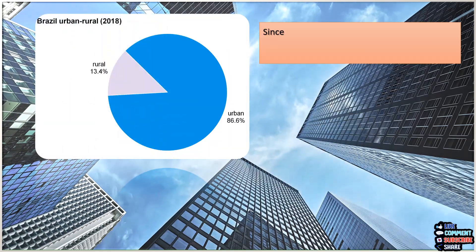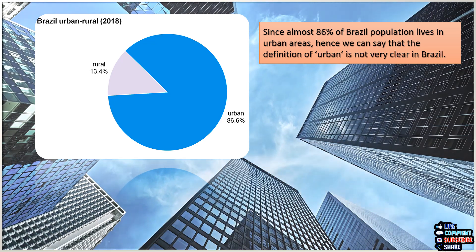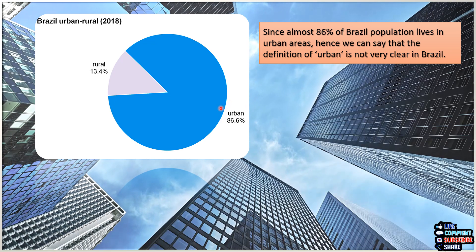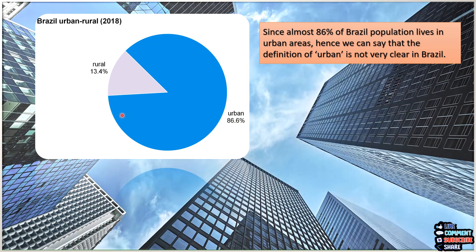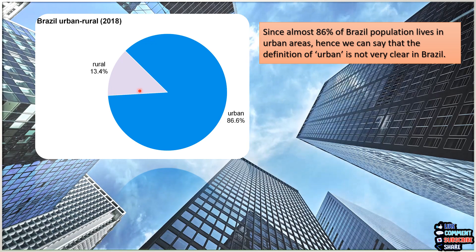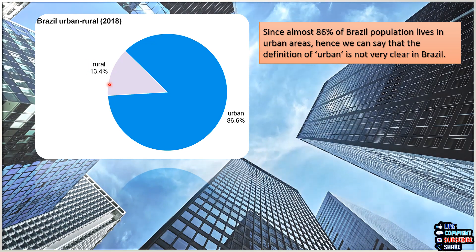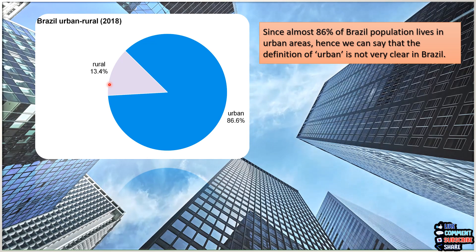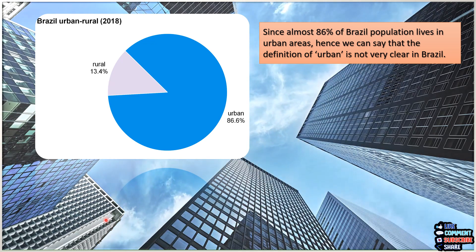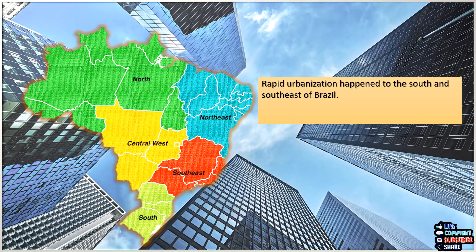Almost 86% of Brazil's population lives in urban areas. Hence we can say that the definition of 'urban' is not very clear in Brazil, because if you refer to this pie chart, 86.6% of the population lives in urban areas and only 13.4% lives in rural areas. The percentage of urban population is more than the rural population, unlike most other countries where rural population is more. That is why the definition of urban is not very clear in Brazil.